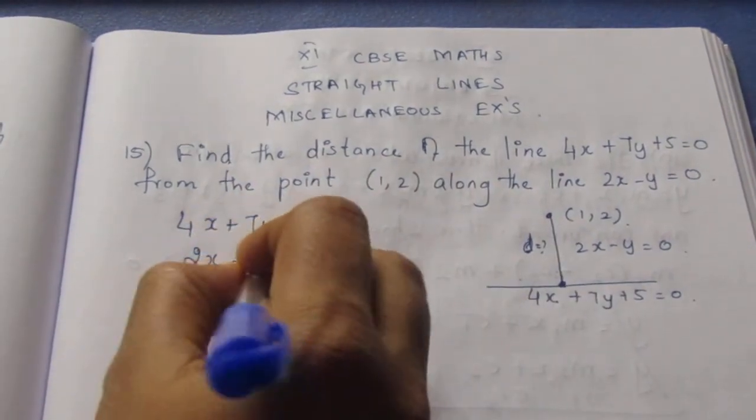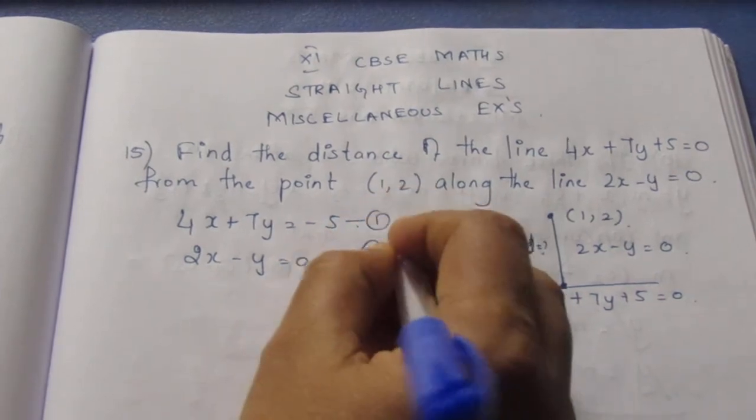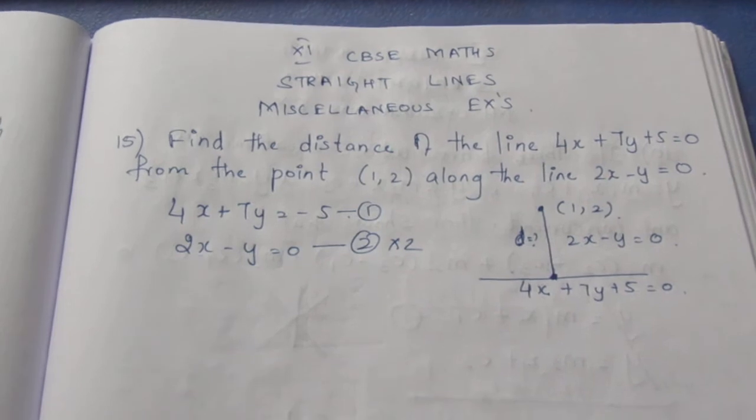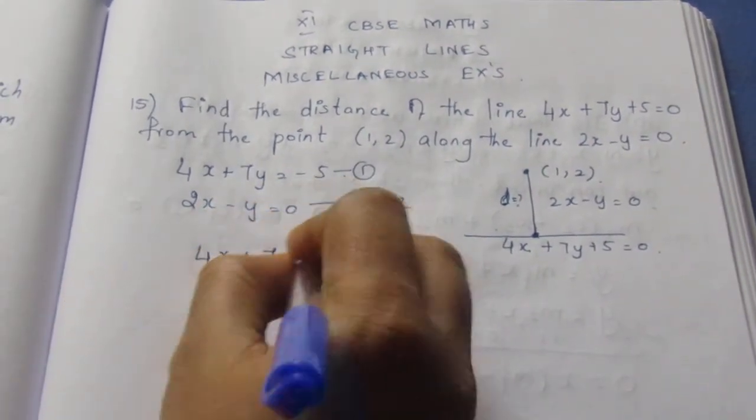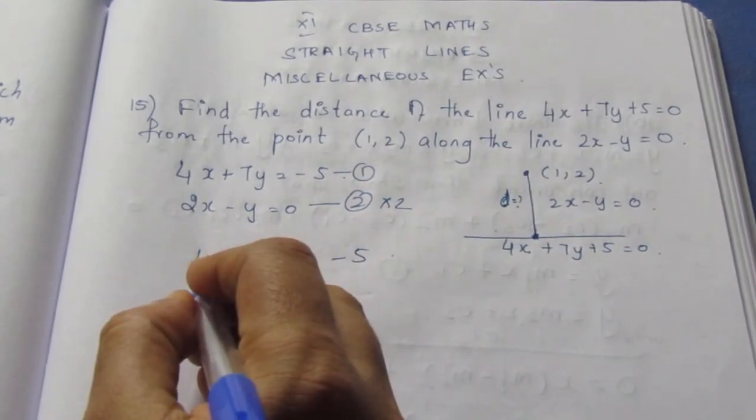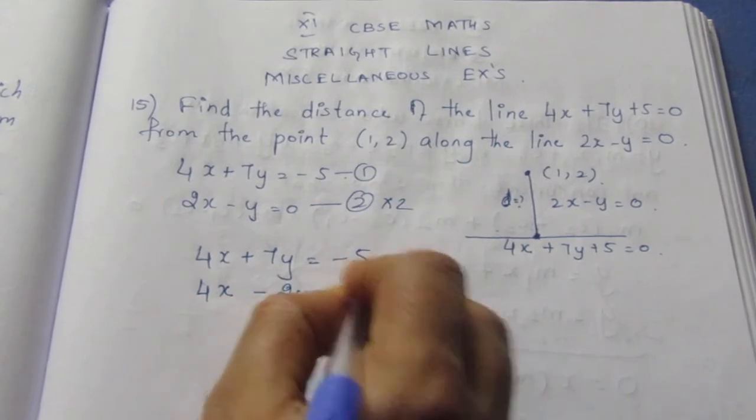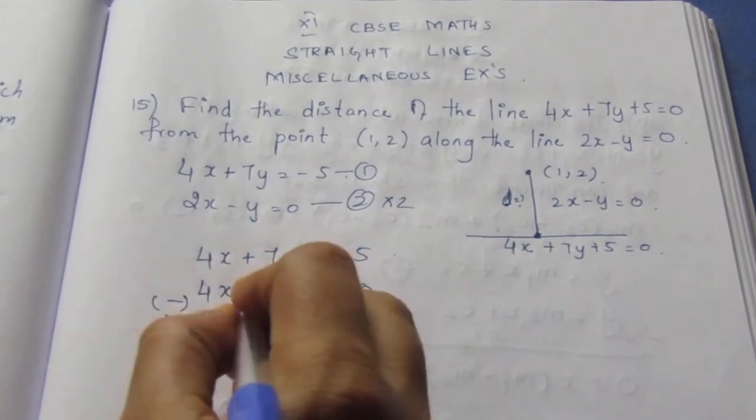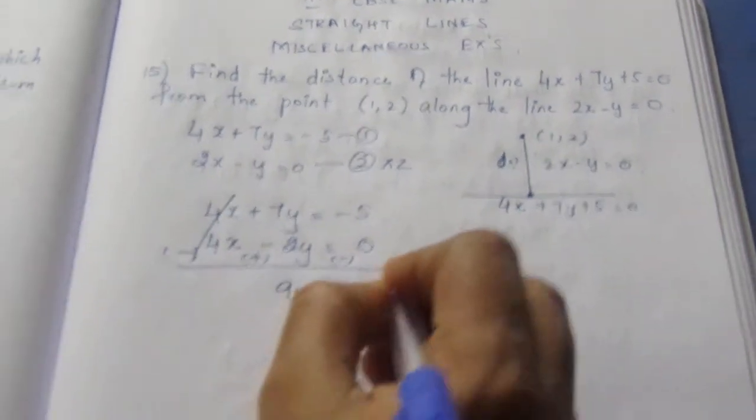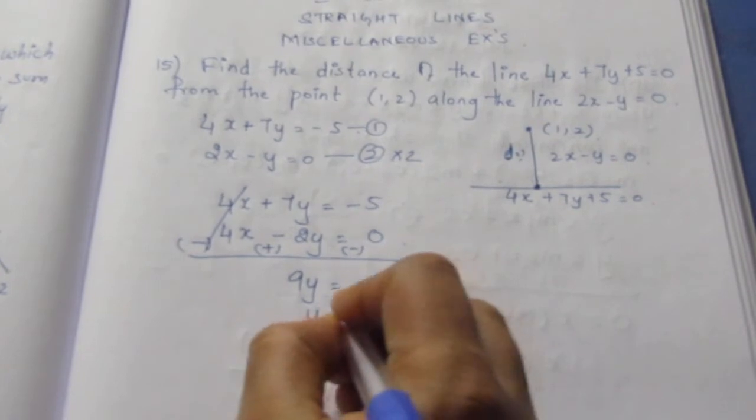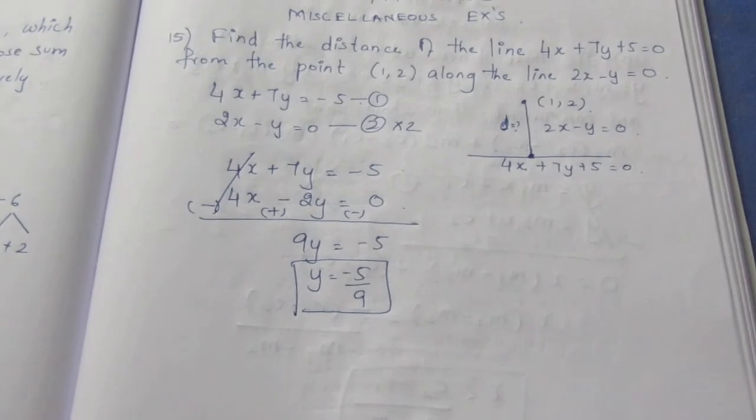Here 4x plus 7y equals minus 5. The second equation here is 2x minus y equals 0. I am going to multiply the second equation with 2 so that 4 here gets cancelled when I subtract. Now this becomes 4x plus 7y equals minus 5. The second equation will become 4x minus 2y equals 0. Here changing the sign it gets cancelled. So now this becomes 9y equals minus 5. So y equals minus 5 by 9. We have got y.